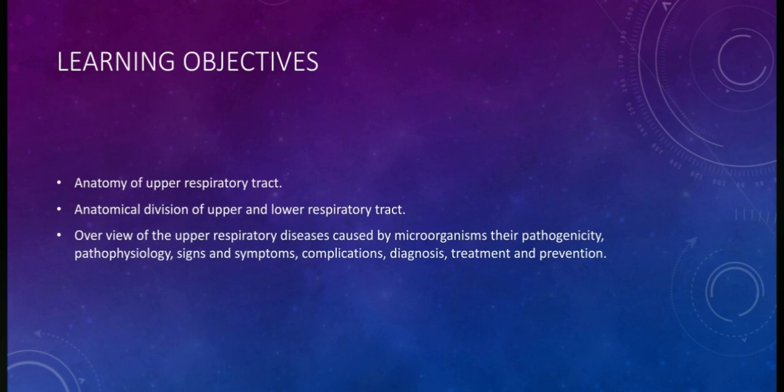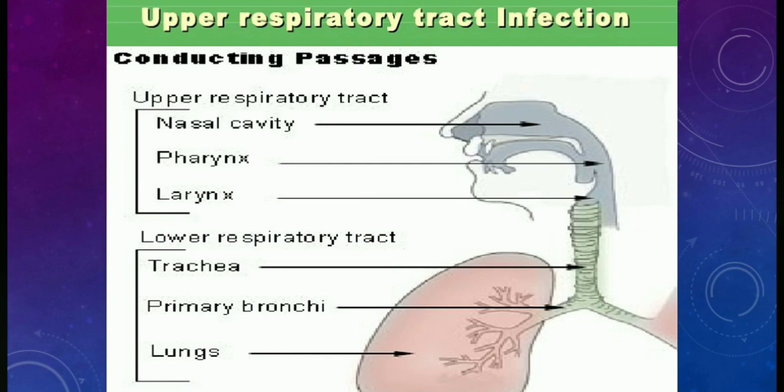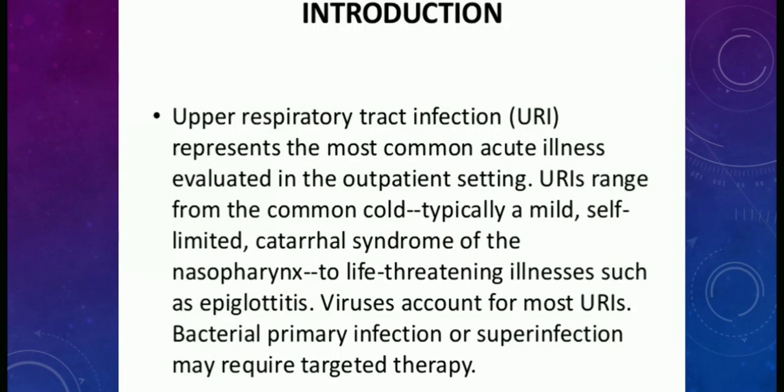As you can see in this diagram, it represents the upper and lower respiratory tract. In the upper respiratory tract you can see the nasal cavity, pharynx, and larynx, and in the lower respiratory tract you can see the trachea, primary bronchi, and lungs.